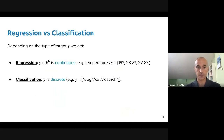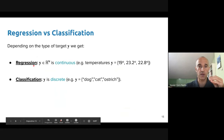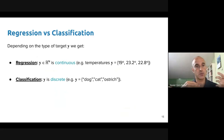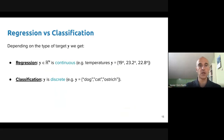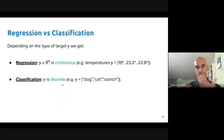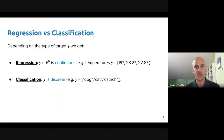The next concept is the difference between regression and classification tasks. Both are similar but depend on the type of target y. If y is continuous, we address a regression task. If y is discrete — a class label — we call it a classification problem. For example, predicting tomorrow's temperature is a regression model, while predicting whether an image is a cat or a dog — where it must be one or the other — is a classification problem.